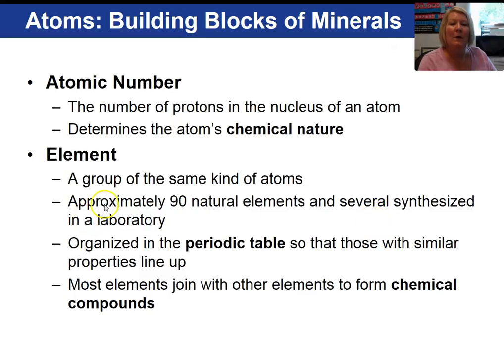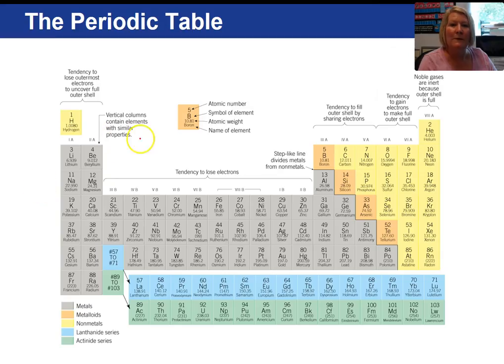So there are approximately 90 naturally occurring elements, and there are others that have been made in the laboratory or synthesized. Most elements join with other elements to form compounds. Now what's nice about this periodic table is each element has its atomic number, which all periodic tables do, the symbol, the atomic weight of the element, and then the name.